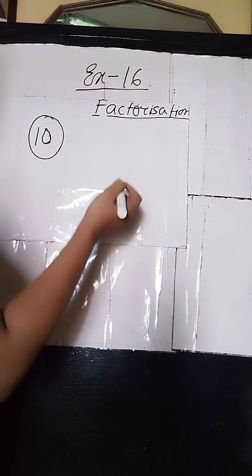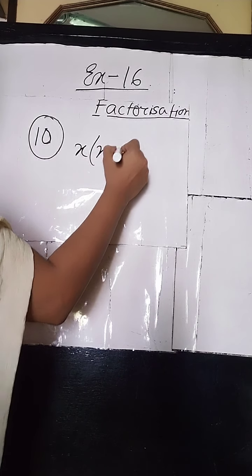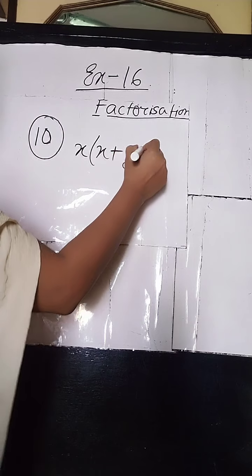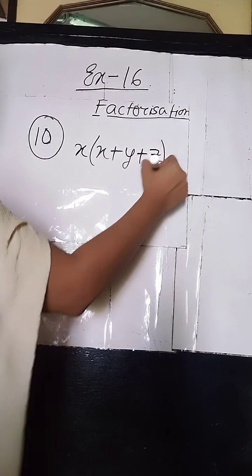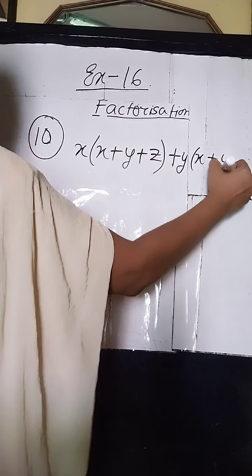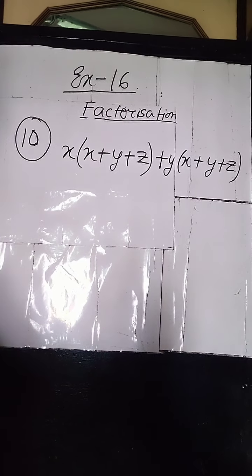Exercise 16 contains a variety of sums and among those we are going to solve the major ones. In sum number 10, it is given: x outside the bracket, and inside the bracket x plus y plus z, plus y times x plus y plus z. This is given in sum number 10 and you have to solve it.